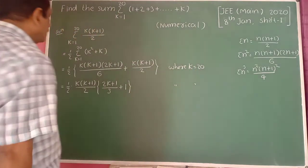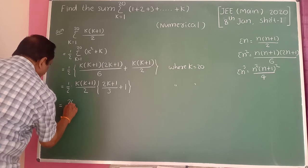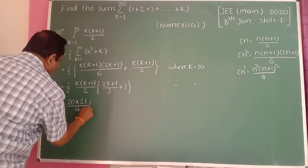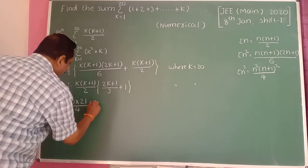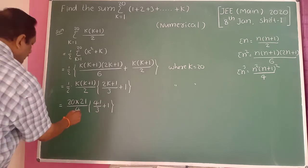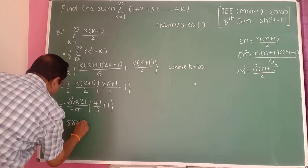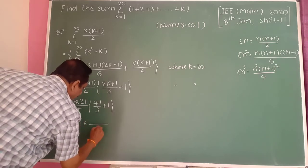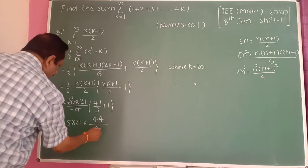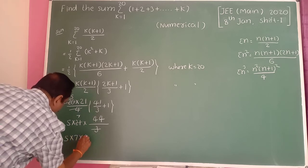Then plus summation of k, which is k times k plus 1 divided by 2, where k equals 28. Taking k times k plus 1 divided by 2 as a common factor, the remaining bracket gives 2k plus 1 divided by 3, plus 1. Put k equal to 28: this gives 20 into 21 divided by 2, times 57 divided by 3 plus 1.